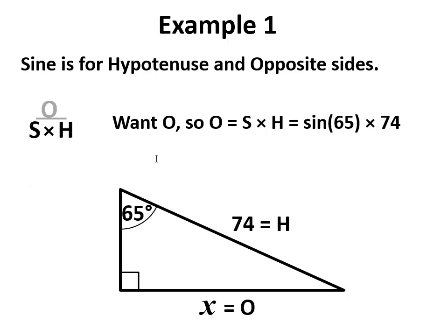S stands for sin and that's always of the angle, so sin 65 times 74. Put that in the calculator and the answer is 67.07. Right, x is 67.07. Let's do it again.